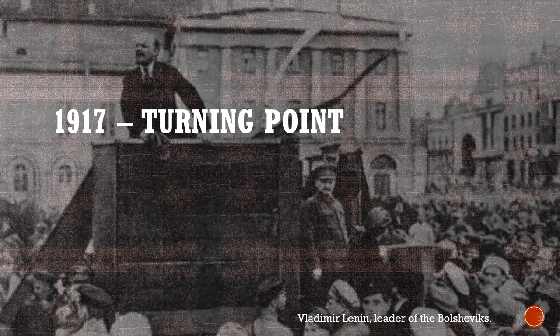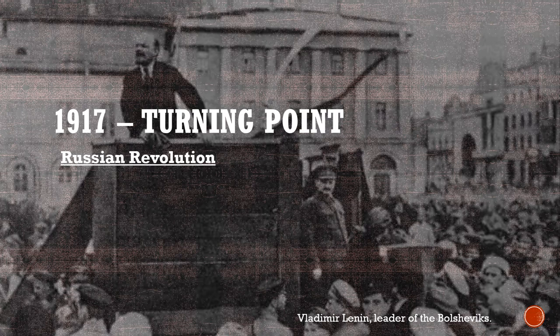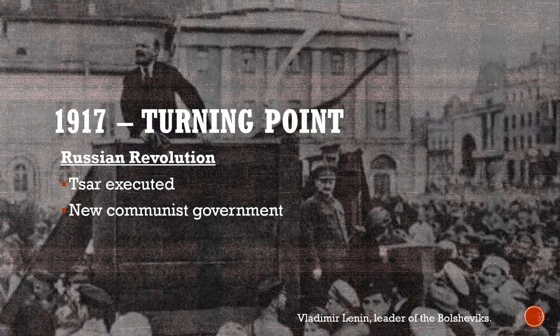However, 1917 would become a turning point in the war for two major reasons. The first was the Russian Revolution, which had a profound effect because Russia was one of the major combatants — the major combatant on the eastern side of Germany — and allied with France and Britain. The war was deeply unpopular in Russia. Russian armies were terribly equipped, with stories of soldiers going into battle without proper guns, and much of the Russian populace wanted out. The Russian Revolution almost immediately ended Russian involvement in the war: the Tsar was executed, his family executed, a new communist government came to power, and Russia withdrew from the war in March 1918.